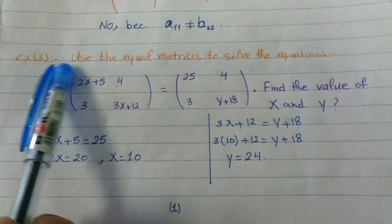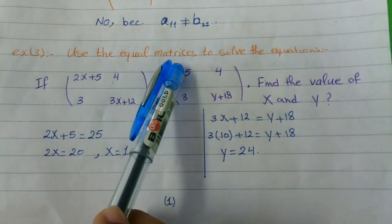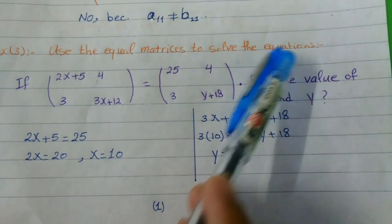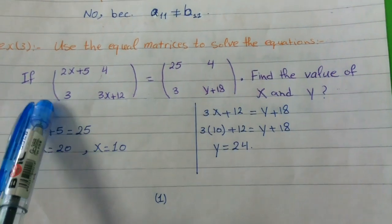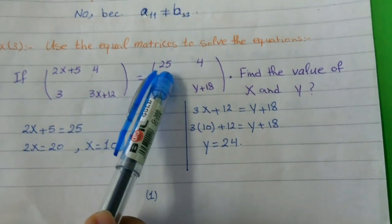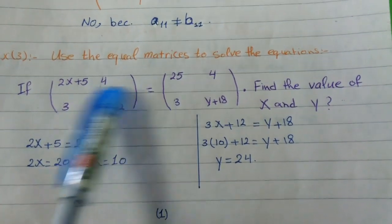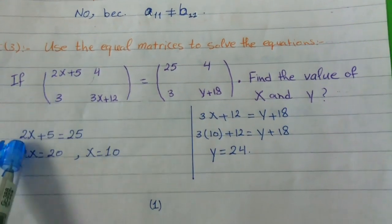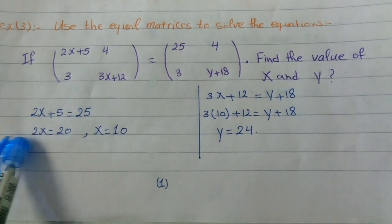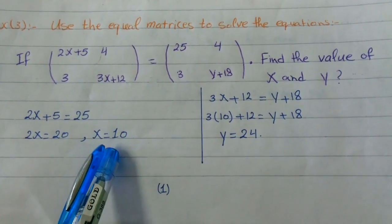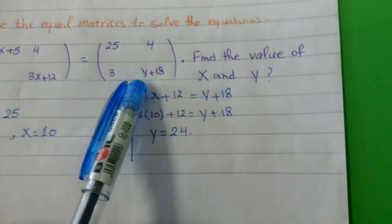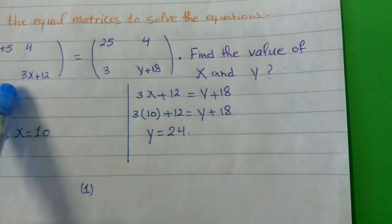Now here is an example of how to use the equality of matrices to find the unknown. We use equal matrices to solve the equations. We are going to solve it as an equation: 2x plus 5 equals 25. To find X, we get 2x plus 5 equal 25, so X equals 10.